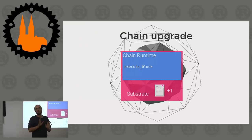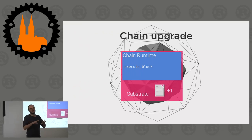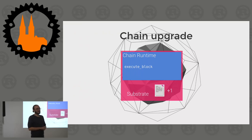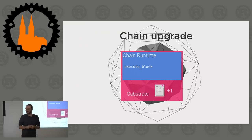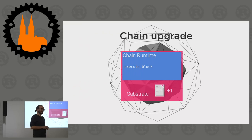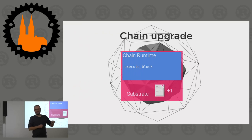Question from audience: In order to make sure that not just anybody can upload new code, you would have to implement your own consensus check to make sure that maybe the vast majority of the network has to agree on this new runtime? Answer: I'll come back to that in two slides.